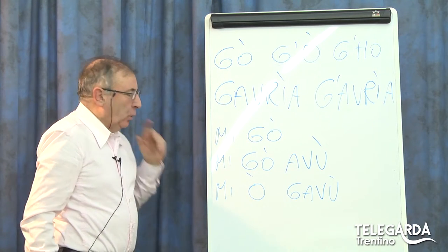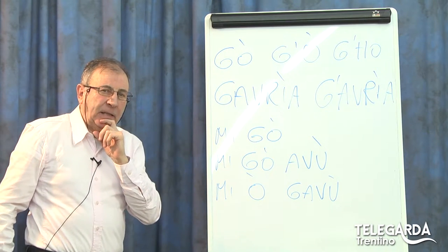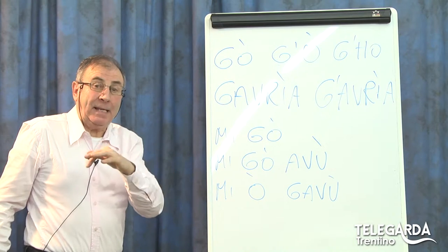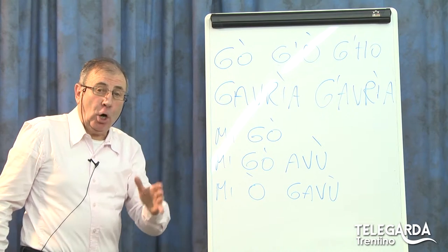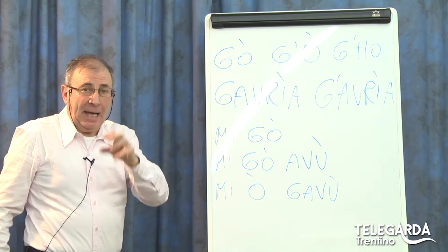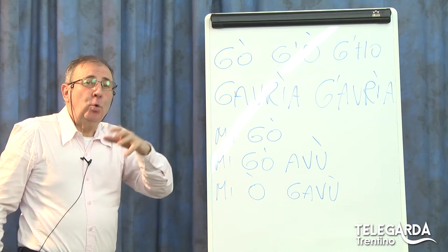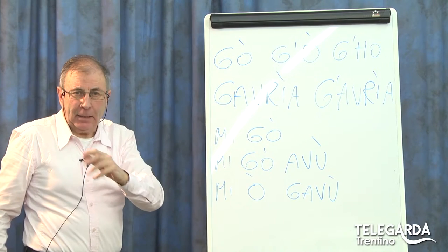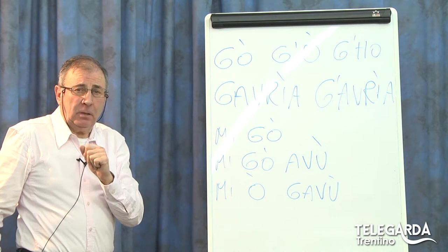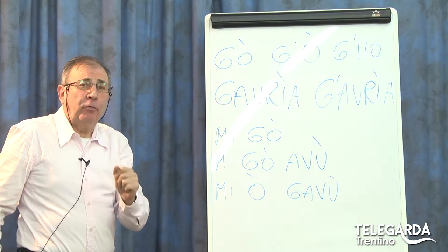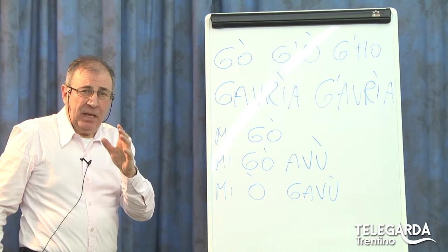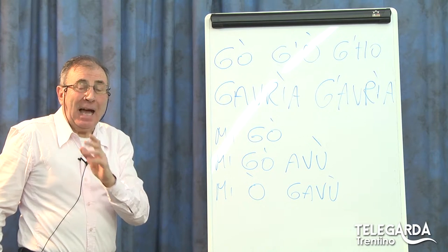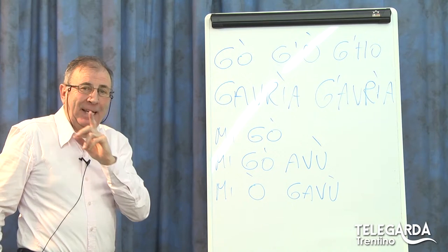Vi ricordate sul verbo avere, il presente indicativo? Ho detto: io ho, tu hai, e li ha. Ho detto: mi go, ti te gai, lul ga, o ela la ga, noi gavem, voi gave, lori i ga, o lore le ga.